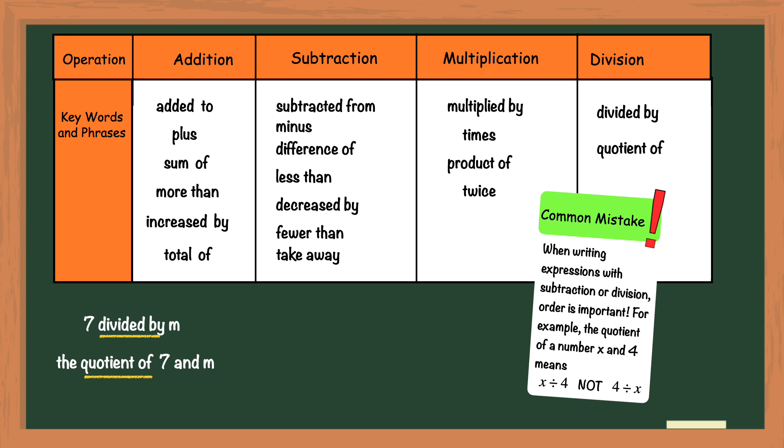Since the number 7 is before the variable m, 7 will go first and the algebraic expression for both of these phrases is 7 divided by m or you can write it as the fraction of 7 over m.